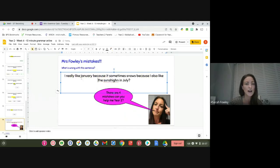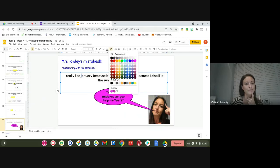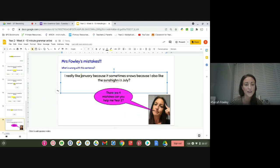So I have a capital letter at the start of my sentence. Good for me. I really liked, oh, here we are. January. What's wrong with my January? That's right. I haven't used a capital letter and I should be using capital letters for all of my months of the year and my days of the week. So that's my first mistake.